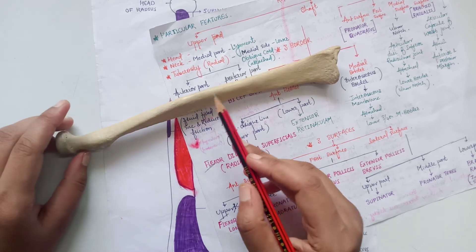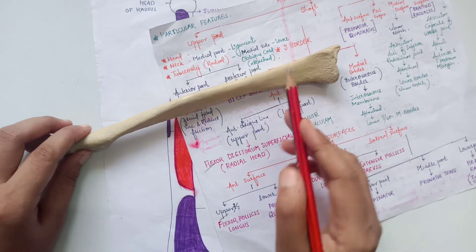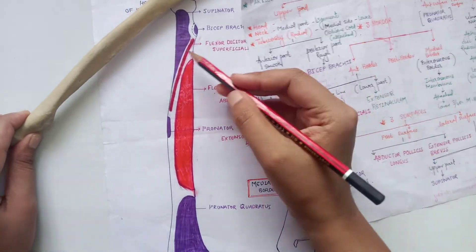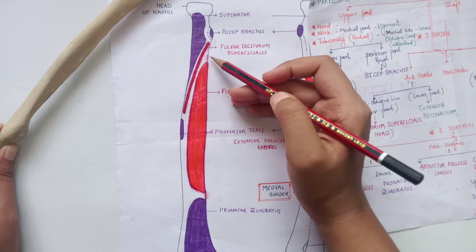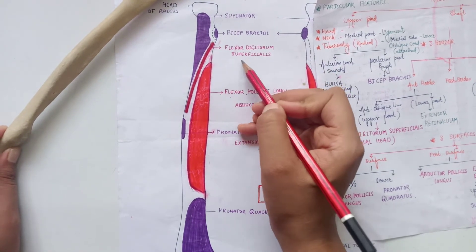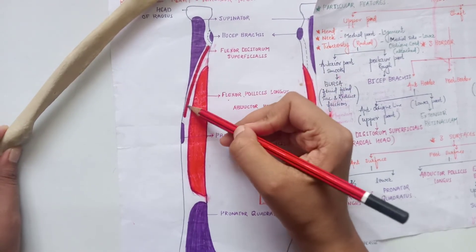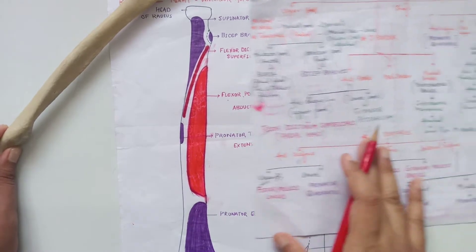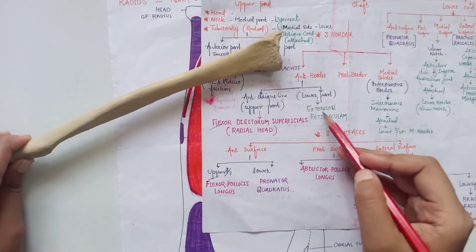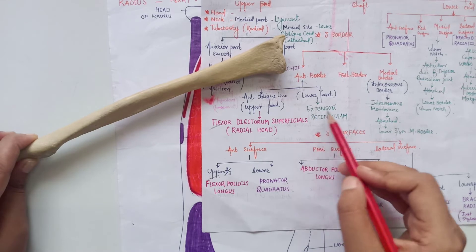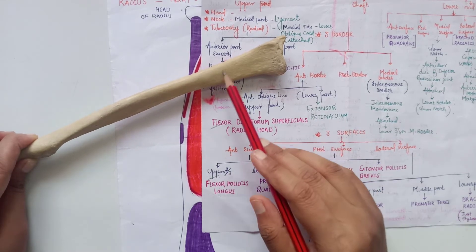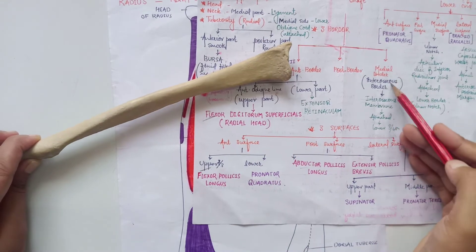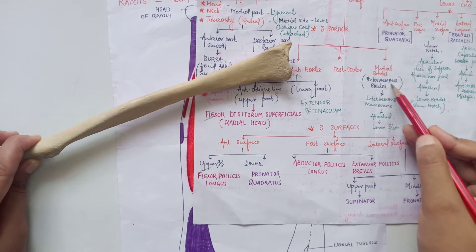On the anterior aspect, the flexor digitorum superficialis has its origin at the oblique line. In the lower part, the extensor retinaculum is present.